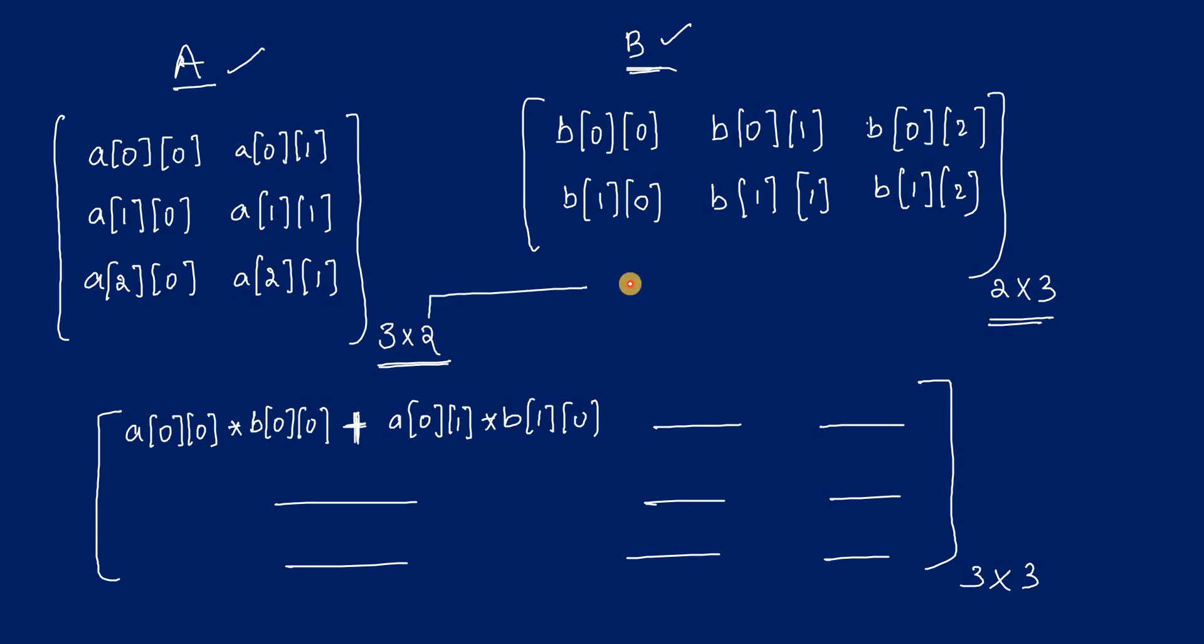Number of columns of matrix A must be equal to number of rows of matrix B. That is the first condition. If and only if that condition is true, then only we have to perform the matrix multiplication, otherwise you have to print an error message that multiplication is not possible.